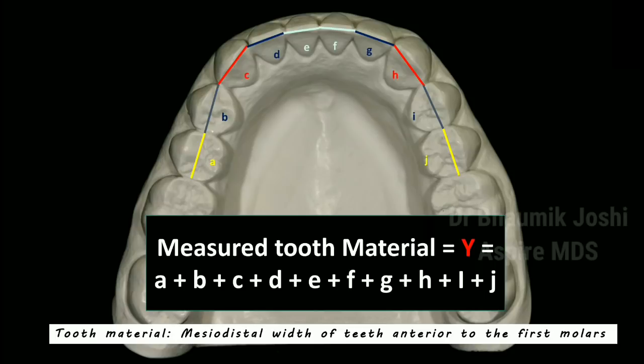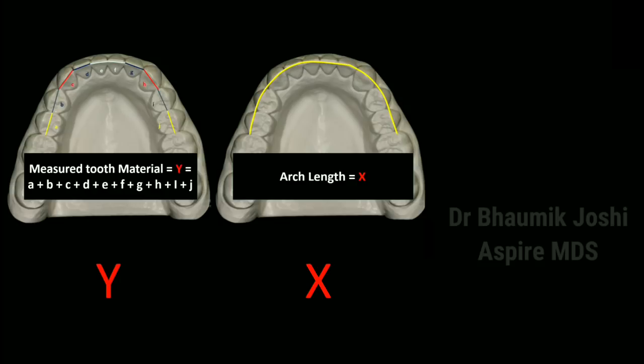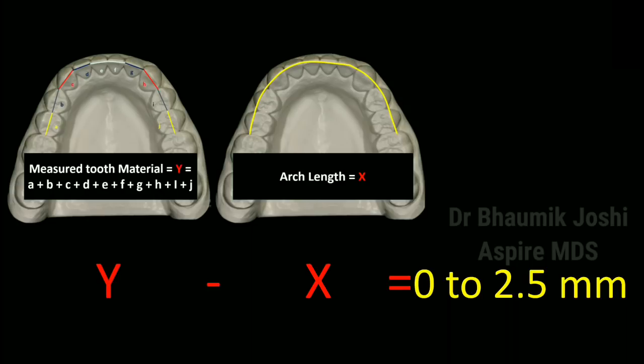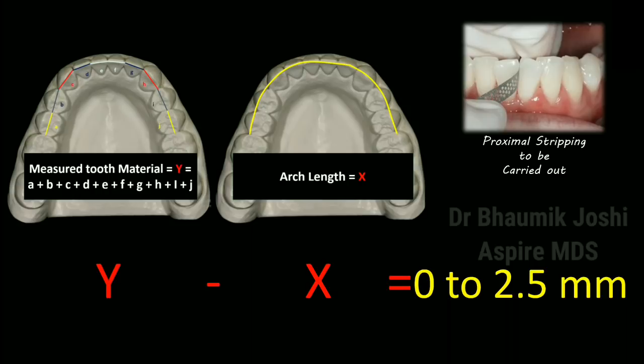For this analysis we have the value Y, which is the measured tooth material, and the value X, which is the arch length. The difference between both of them will tell us whether there is a discrepancy and if so, how much. If the value is 0, that shows there is no discrepancy. If the value is from 0 to 2.5 mm, it shows minor discrepancy, and correction can be done with proximal stripping.